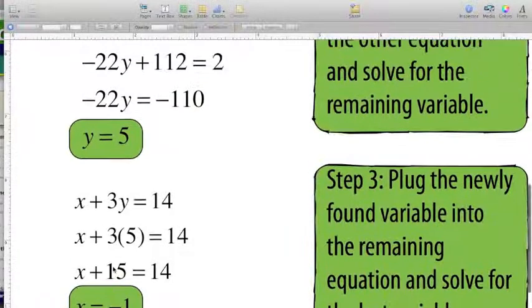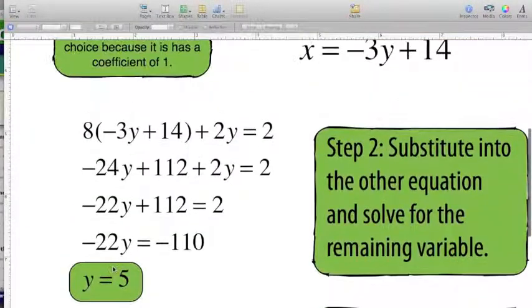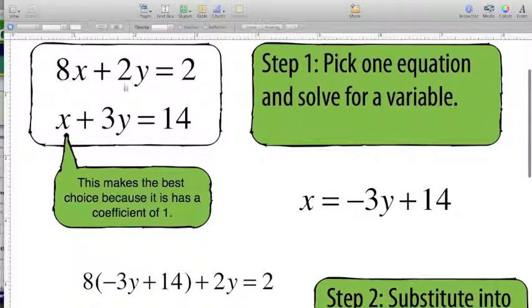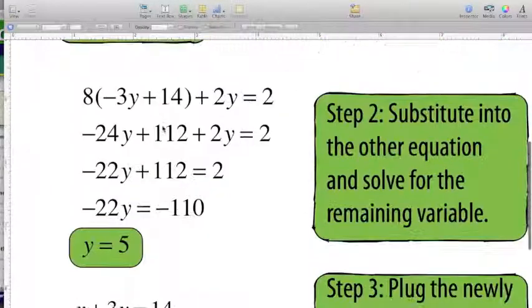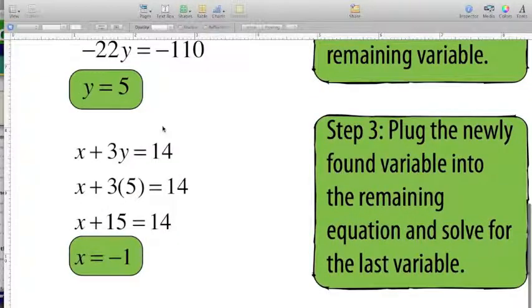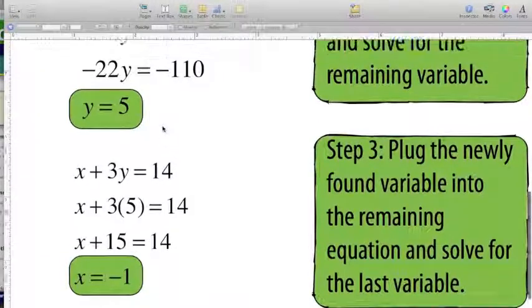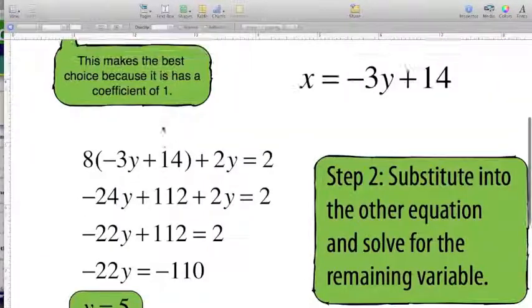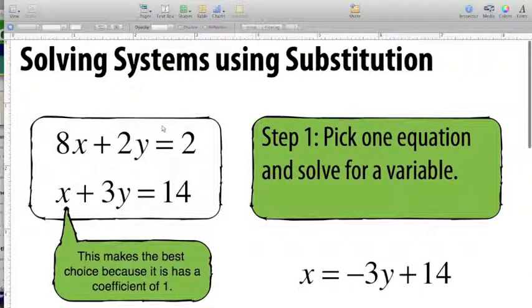And if I plug in back at the top negative 1 and 5 into both of my equations here and here, I find out that both of them are true and it works. This is how you use substitution to solve a system of equations. If you need to watch it again or print this off and go through it step by step, please do that.